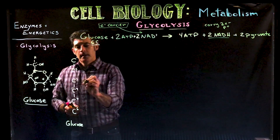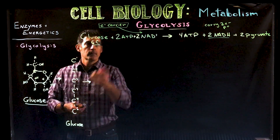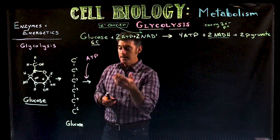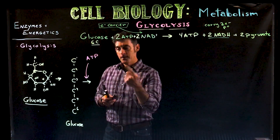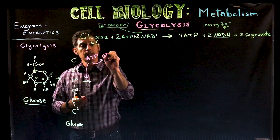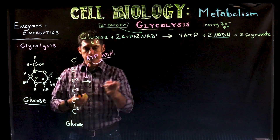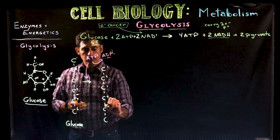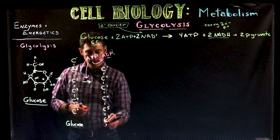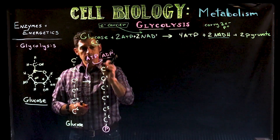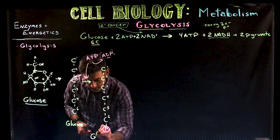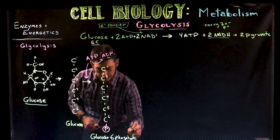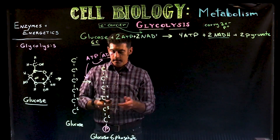The first thing that happens is an ATP is used. An enzyme called hexokinase binds the ATP and the glucose molecule, breaks off one phosphate from the ATP — which leaves as ADP — and attaches that phosphate to the number six carbon. This molecule is called glucose-6-phosphate. That's an important name that will come back in other contexts.